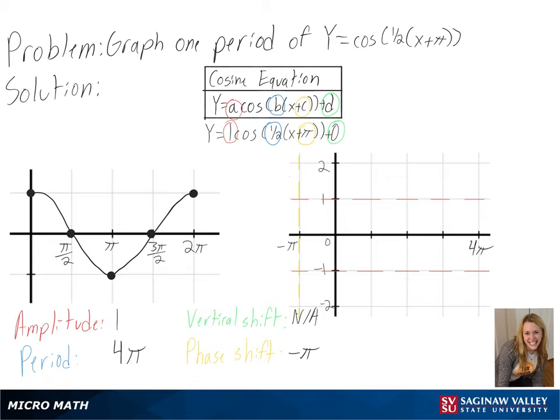We can also use our half to find our highest, middle, and lowest points by dividing each point on our original graph by a half. While these would be our original points, we moved pi units to the left.